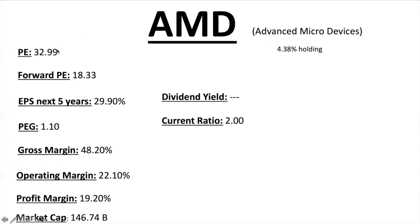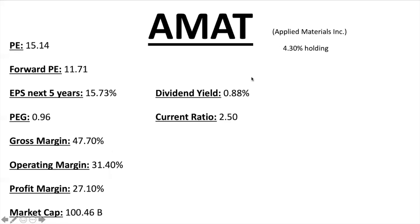AMD, Advanced Micro Devices, has just over 4% holding in the ETF — another one of my favorites. PE ratio 32.99, Forward PE 18.33 — a lot of future growth projected for next year. EPS next five years 29.9% — fantastic, giving it a low price-to-earnings-growth ratio with a lot of compounded growth forecasted. Gross margin about 50%, operating and profit margins hovering around 20%. Market cap $146.74 billion, no dividend, current ratio 2.00. Their debt is essentially zero — very small.